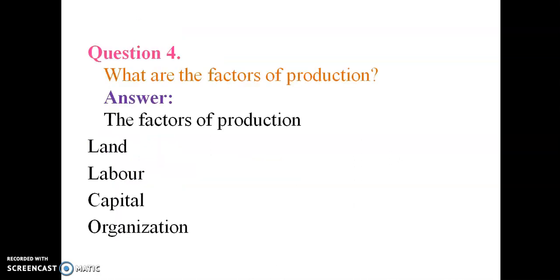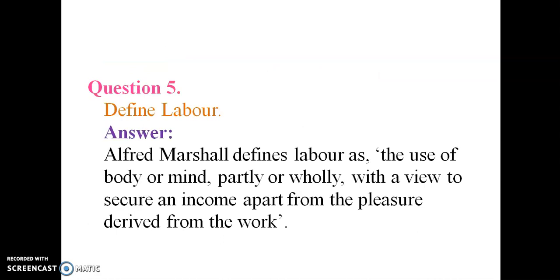What are factors of production? The factors of production are capital, labor, land, and organization. Land and labor are primary factors. Capital and organization are secondary. Define labor. Alfred Marshall defined labor as the use of body or mind, partially or wholly, with a view to secure an income apart from the pleasure derived from the work.